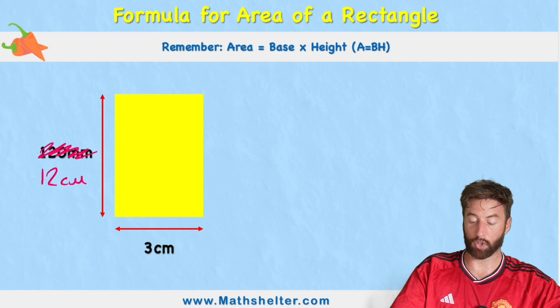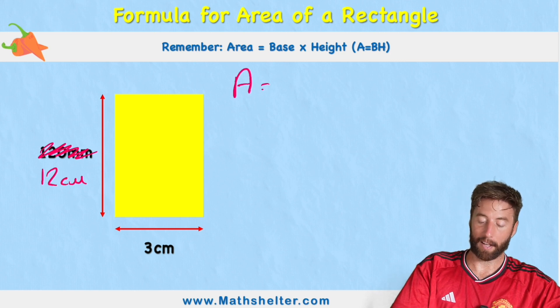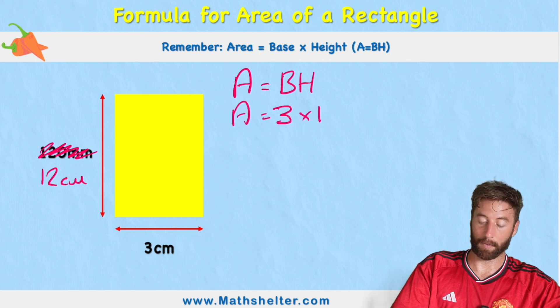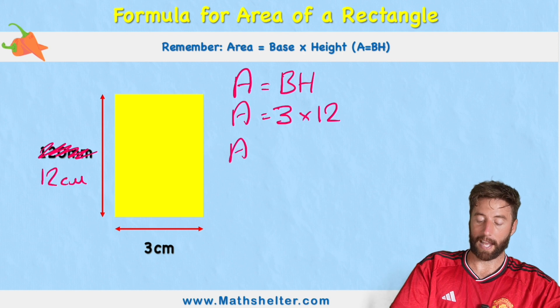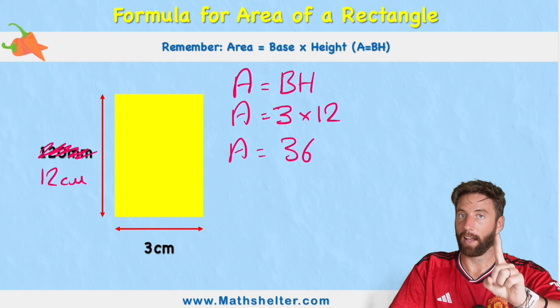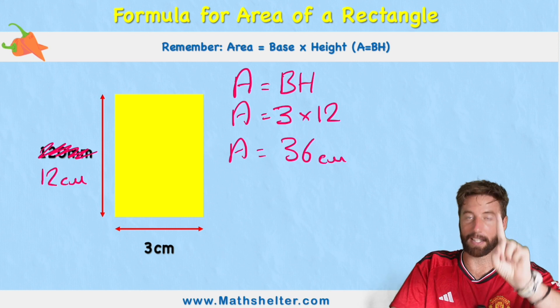Now I'm ready to just use my formula. Area equals base times height. Therefore, area in this case is 3 times 12.